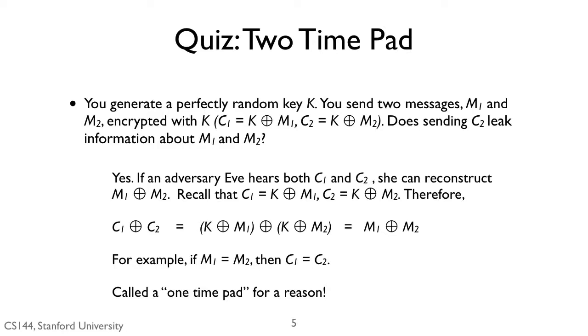Since C1 XOR C2 is equal to M1 XOR K XOR M2 XOR K, the two K's cancel. This means C1 XOR C2 is equal to M1 XOR M2.